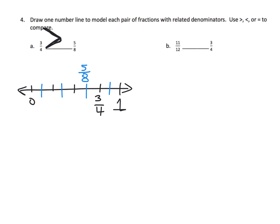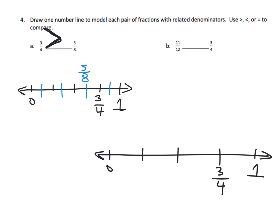Similarly, for three-fourths versus eleven-twelfths, we model three-fourths first, then convert the four pieces into twelve by cutting each fourth into three pieces. Counting over eleven of those twelfths, eleven-twelfths lands to the right of three-fourths on the number line. So eleven-twelfths is larger than three-fourths.